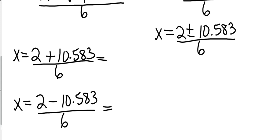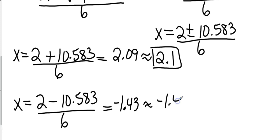And then down below, I'm going to have 2 minus 10.583, and that's going to be negative 1.43, which is going to round to negative 1.4. So that shows you one that doesn't come out to be perfectly even, but shows you that we can use the quadratic formula for it.